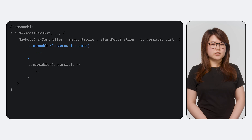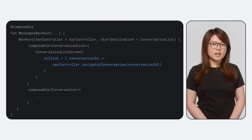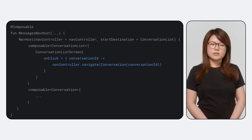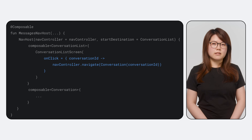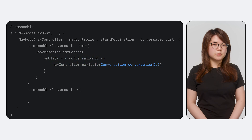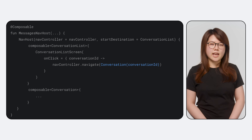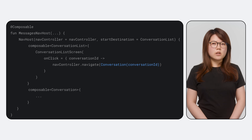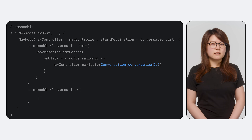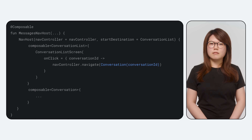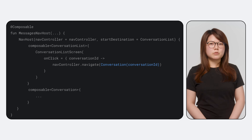Now, let's go back to your conversation list. To navigate when clicking on an item, you can set up an on-click listener so that upon click, it'll navigate to the selected conversation. Here, you need to pass in the route to navigate to, which should be an instance of the Conversation route containing the id of the selected conversation. Note that you must navigate with an instance of the defined route. If the route were an object declaration, you can directly pass that in. However, if the route were a class, you must create and pass in an instance of that class.